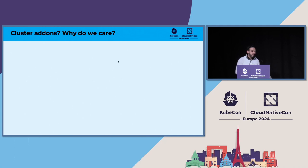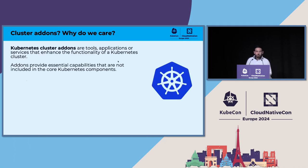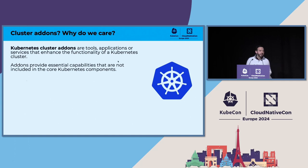Cluster add-ons — what are they and why do we care? Cluster add-ons are tools, applications, or services that enhance the functionality of a Kubernetes cluster. They provide essential capabilities that are not included in the core Kubernetes components. Kubernetes is great, but a vanilla cluster can only do so much. You need to enhance and expand it — that's what cluster add-ons are here for.